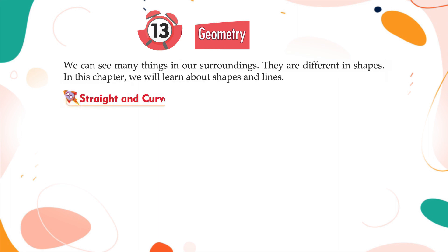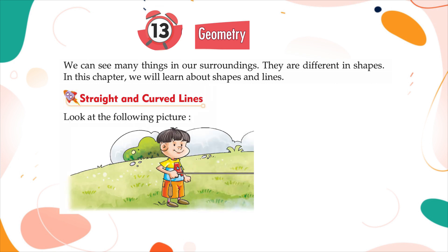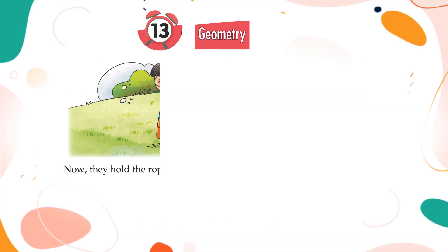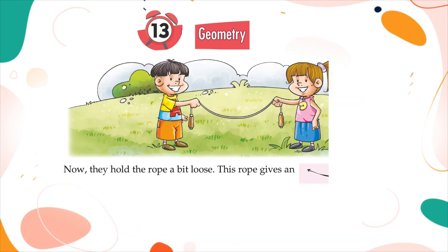Straight and curved lines. Look at the following picture. Suhani and Arjun are holding a skipping rope tightly. This rope gives an idea of a straight line. Now, they hold the rope a bit loose. This rope gives an idea of a curved line.